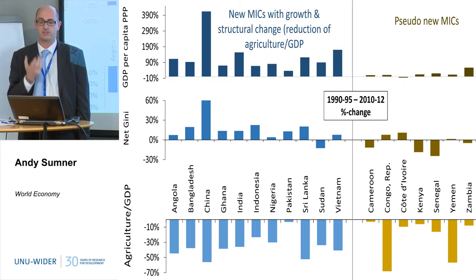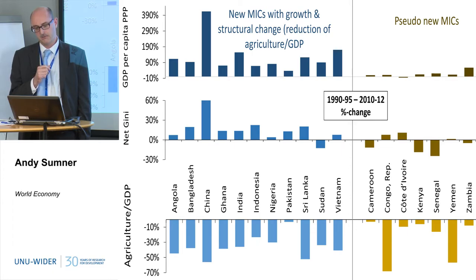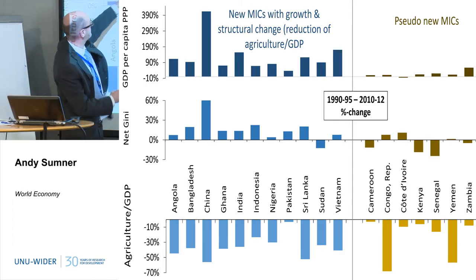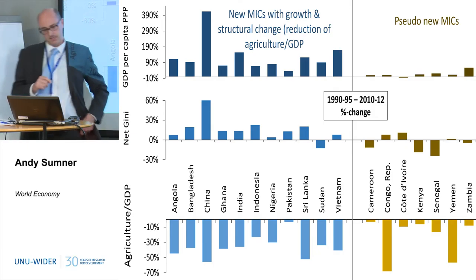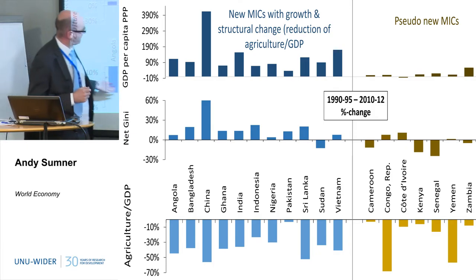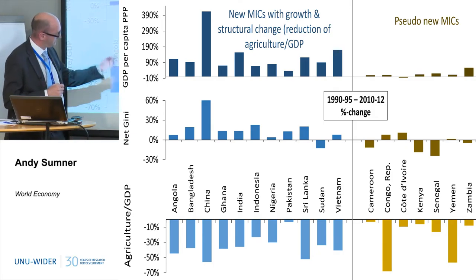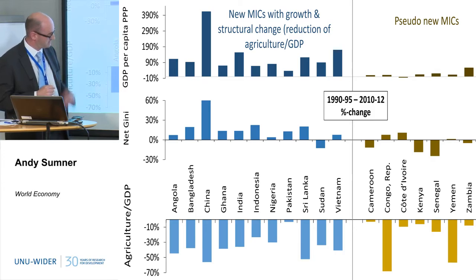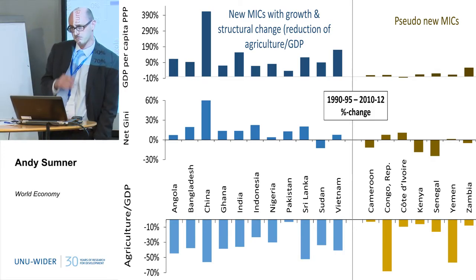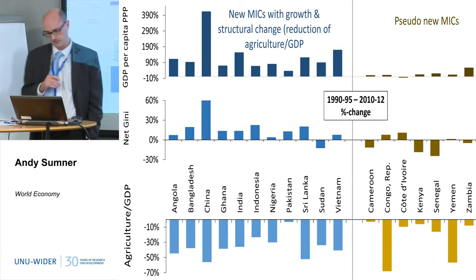These countries have had very large increases in GDP per capita PPP, and most of them have had substantial increases in Gini — though it's been somewhat compressed by China's large one. All of them, with the exception of Pakistan, have had a substantial move away from agriculture since the end of the Cold War.